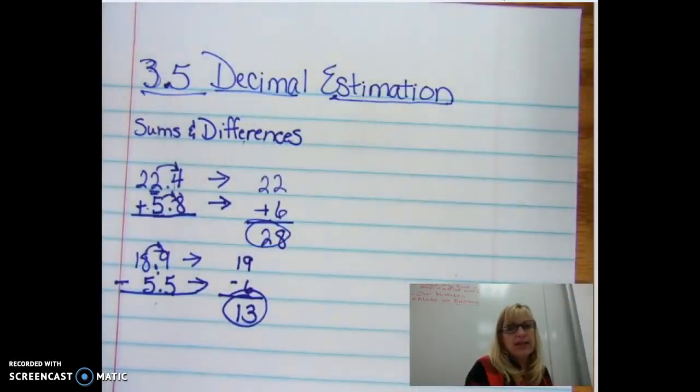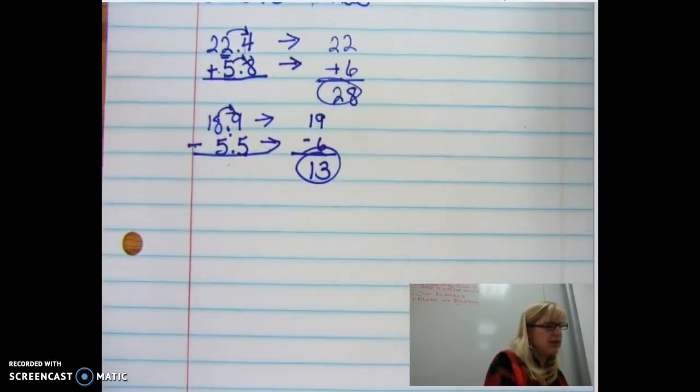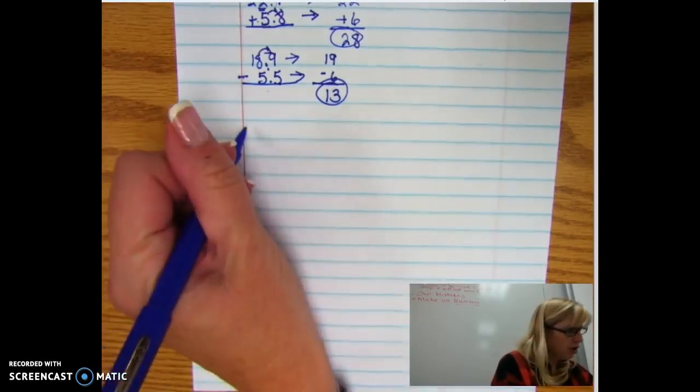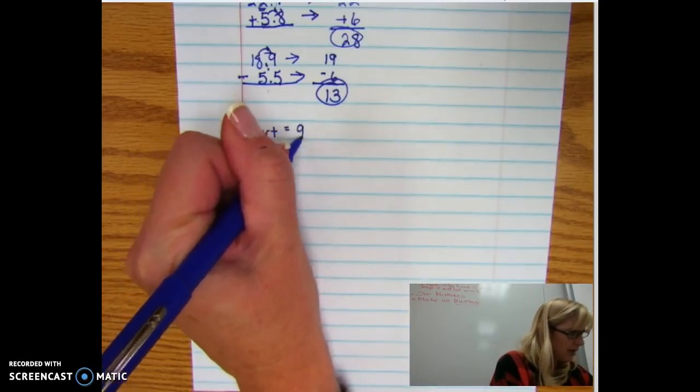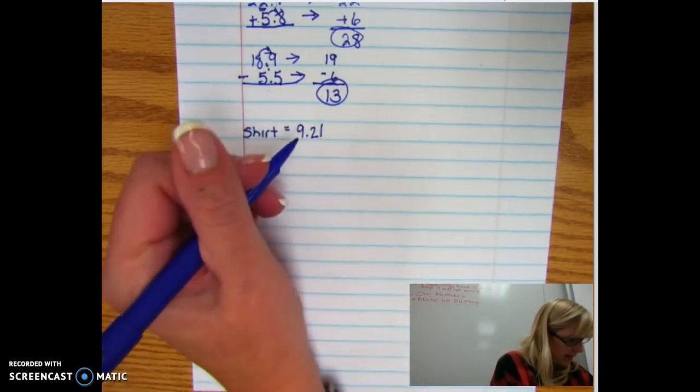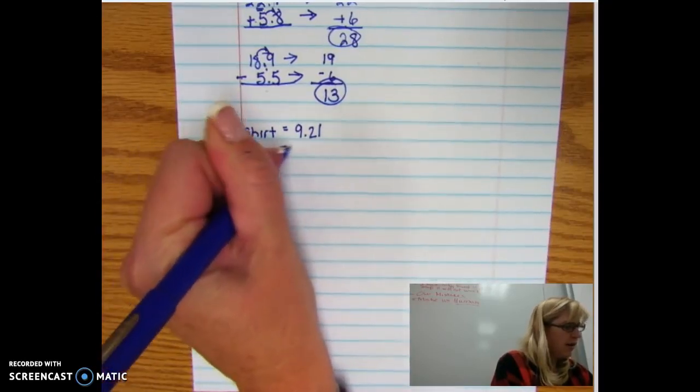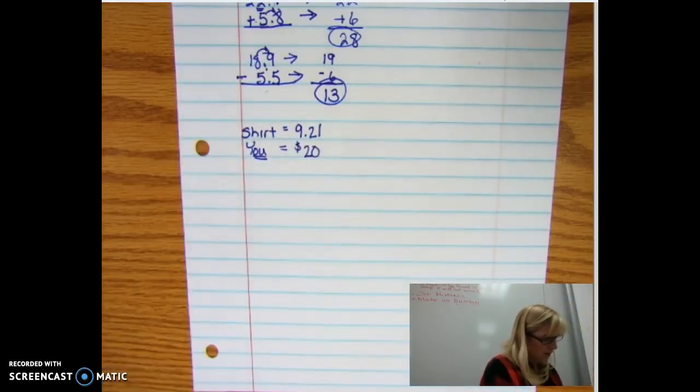The part of the assignment and the piece that gets to be a little bit tricky is when you need to start using your logical reasoning. So let's say that you want to buy a shirt and the shirt is going to be $9.21 and you brought a $20 bill.